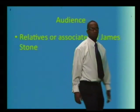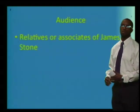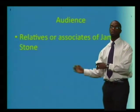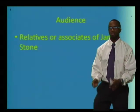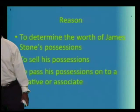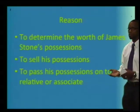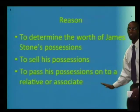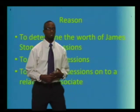Who is our audience here? Again, if this is an estate inventory and James Stone had died, his relatives or associates are the audience. They are either receiving the servants that James Stone left behind, or they are going to sell them, knowing the worth of the property left behind. Our reason: we want to determine the worth of James Stone's possessions through this estate inventory — either to sell these possessions or to pass them on to a relative or associate.